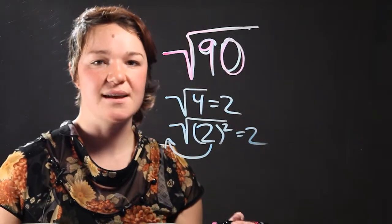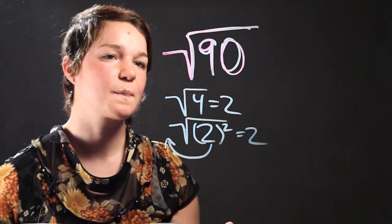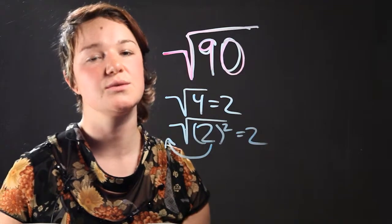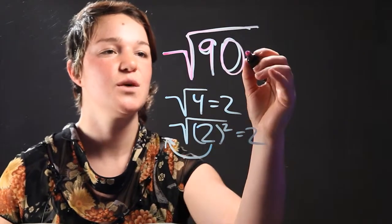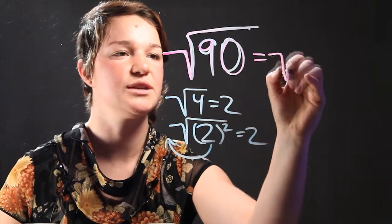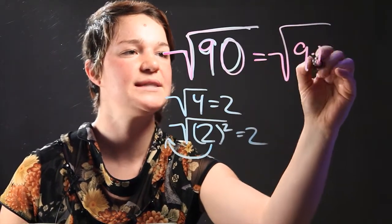So in order to simplify this, we're going to have to take 90 and make it into the longest expression that we can, multiplying it. So what is 90 equal to? 90 is equal to 9 times 10.